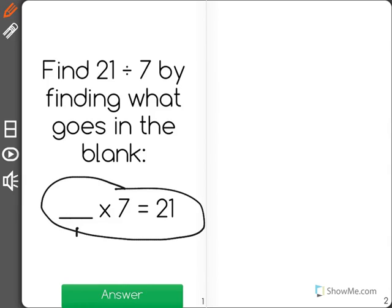This means that a certain number of groups of 7 will equal 21. So what I'm going to do is I'm going to count out groups of 7 until I get to 21.